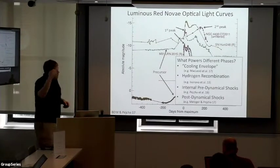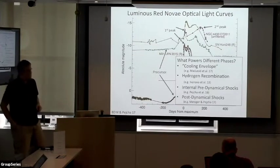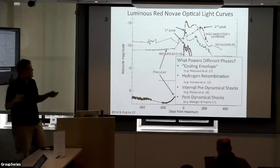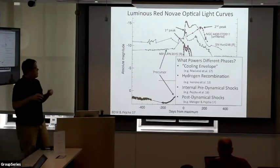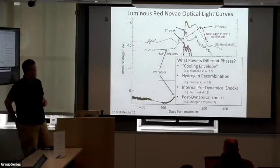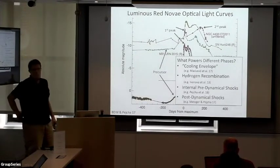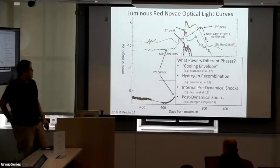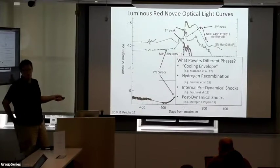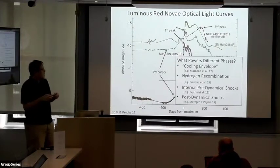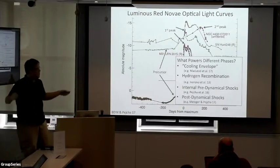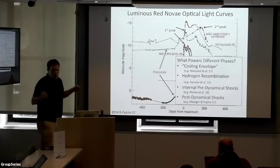So I just want to talk about what are the different things that could be powering this emission? Is it cooling envelope emission, namely the fact that we shock heat and eject some very hot material, and as it expands into space it radiates energy? Is it the fact that as this matter is expanding it recombines, and that releases some energy that powers the light? Or could there be shocks in the event either prior to the dynamical phase or after, as the dynamical material plows into whatever was ejected prior to the dynamical phase?